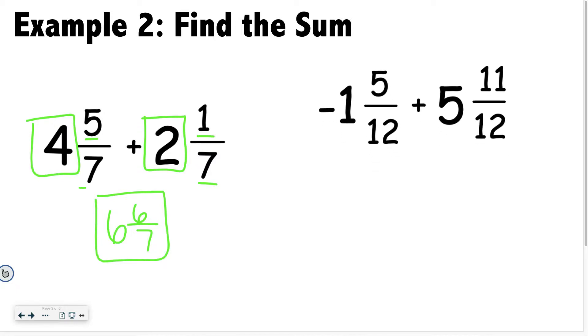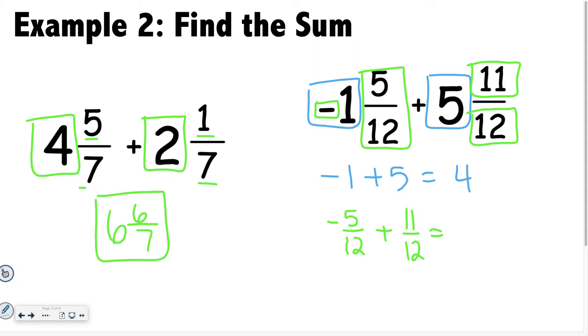So if I take my whole numbers, I have negative 1 plus 5. And then just so you know, when you are adding the fractions, this also stays as a negative. So I'm going to say negative 5 12ths plus 11 12ths. So if I add my whole numbers together, I get 4. And if I add my two fractions together, a negative 5 plus 11 is 6 12ths or 1 half. So my final answer would be 4 and 1 half.